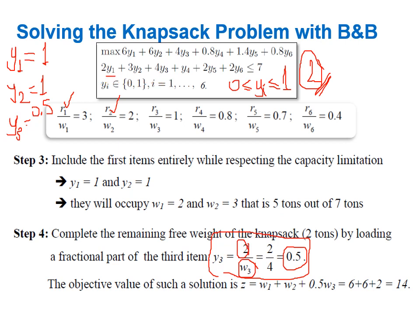Checking the constraint: one times two plus one times three plus 0.5 times four equals two plus three plus two equals seven, which satisfies the capacity. For the objective function: one times six plus one times six plus 0.5 times four equals six plus six plus two equals fourteen. So the objective function value is 14, and this is the optimal solution for the relaxed problem.